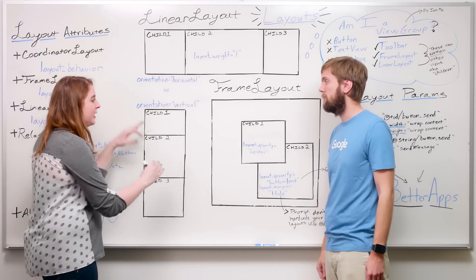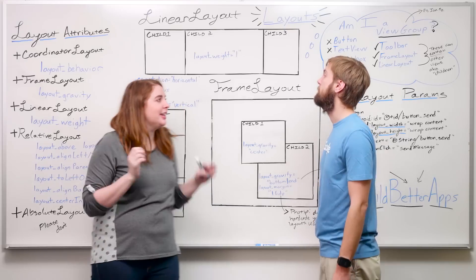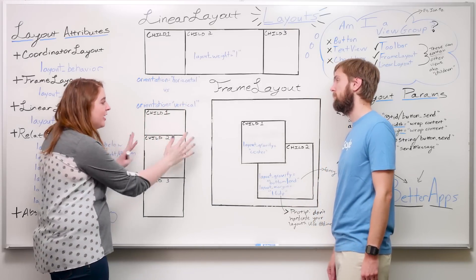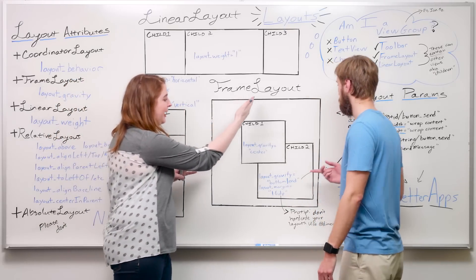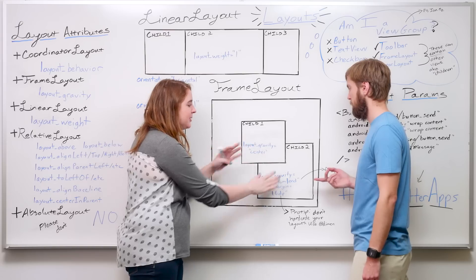Exactly, but if you want to influence that overlapping or that column, that's when you want to use a layout attribute. This is what clarifies to the system where these children should be. Like, look at frame layout. We have layout gravity specifying on both children, but in different ways so that they overlap.